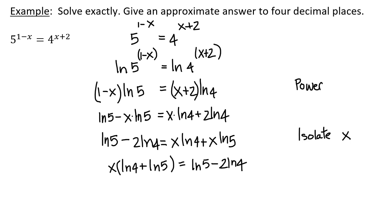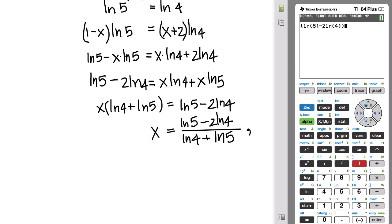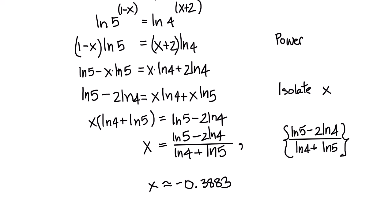Dividing both sides by ln 4 plus ln 5 gives the exact solution. Using the calculator — make sure you put the entire numerator in parentheses and the entire denominator in parentheses — this is approximately negative 0.3883. So the approximate solution is negative 0.3883 and the exact solution set is {(ln 5 minus 2·ln 4) divided by (ln 4 plus ln 5)}.